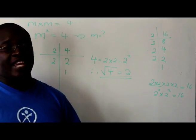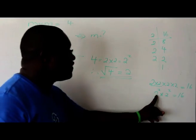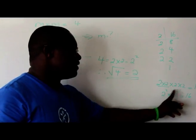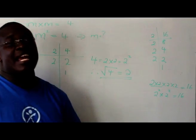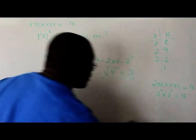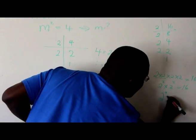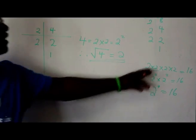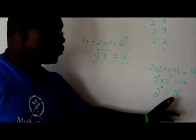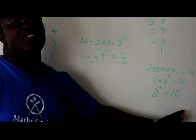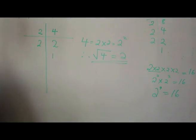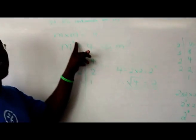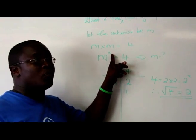2 squared times 2 squared, which is 16. And if you know your laws of exponents, they say that if the base is the same, you can add the exponents. So it's 2 to the power of 4 is equal to 16.